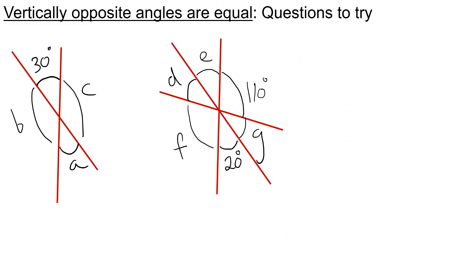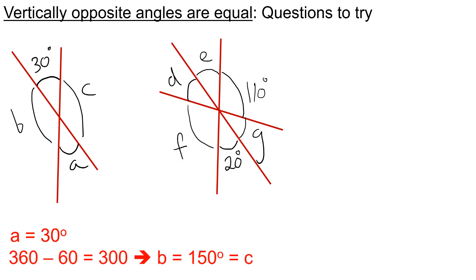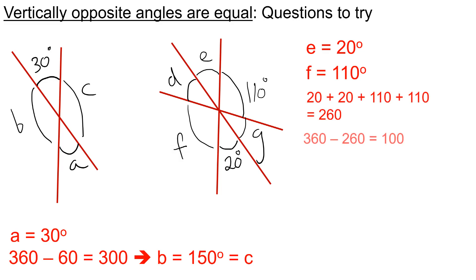Here are some quick questions for you to try. Please pause the video now and have a go. And when you're ready for the answers, press play. A should be 30 degrees, and B and C should both be 150 degrees. For the next question, E should be 20, F should be 110. And D and G are both 50.